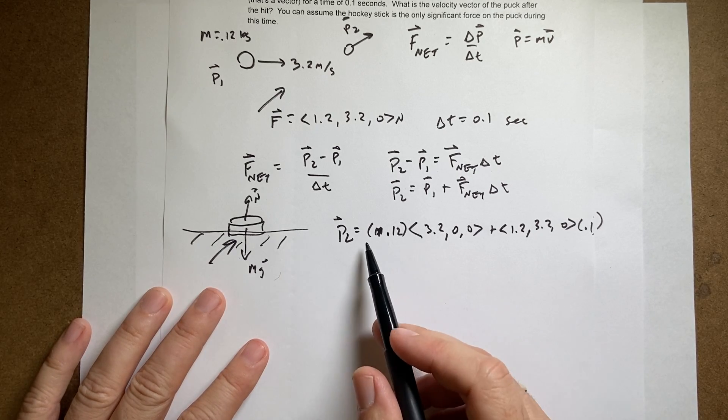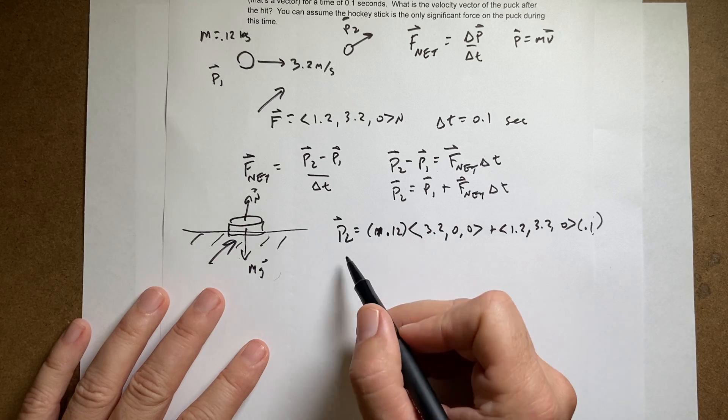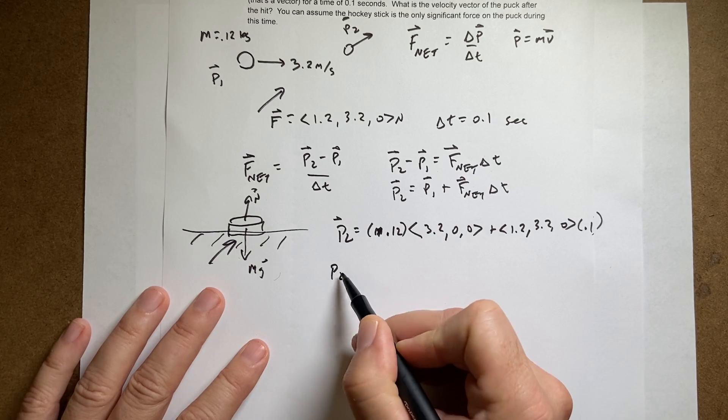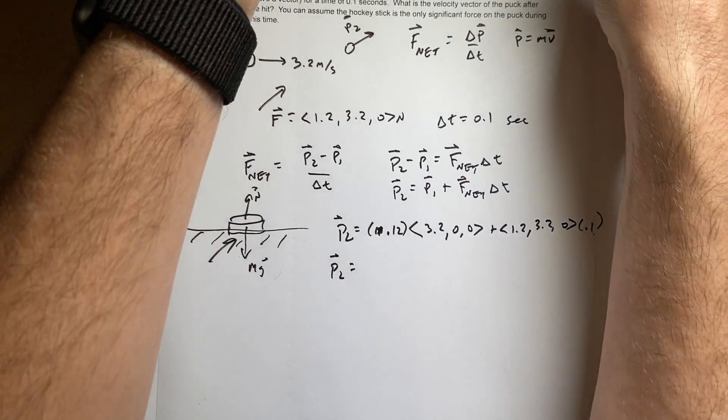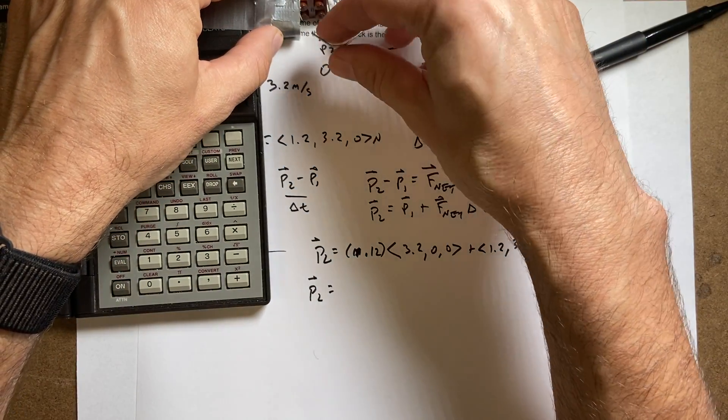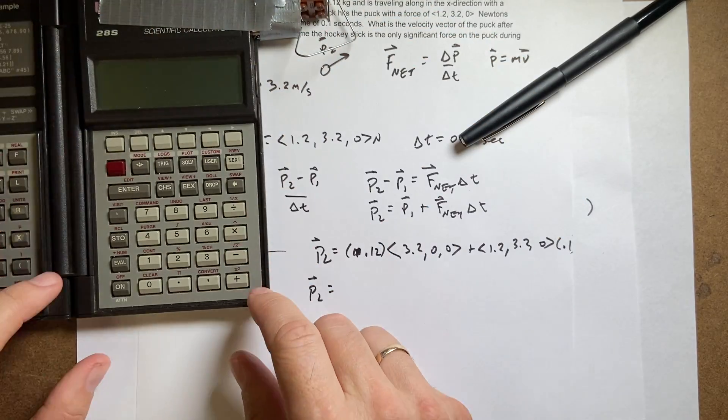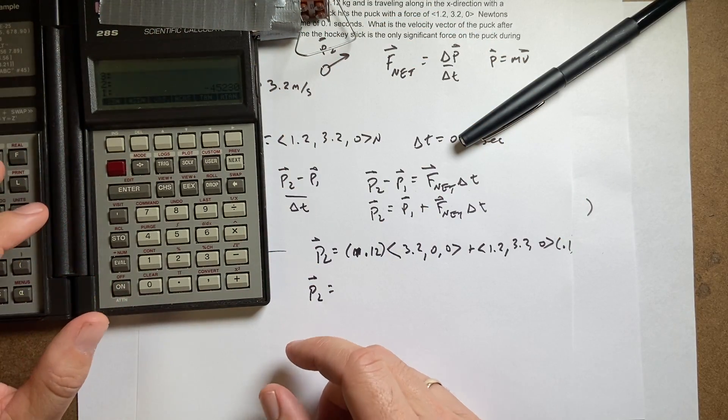So let's do just the x direction first. I'm going to write P2 equals the vector. Let's see if my calculator is working. Oh, now it's definitely not working. I pulled the magnet thing off. I need to get this to work better. And it works.